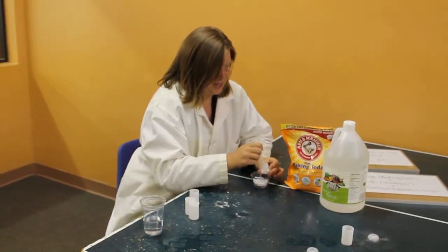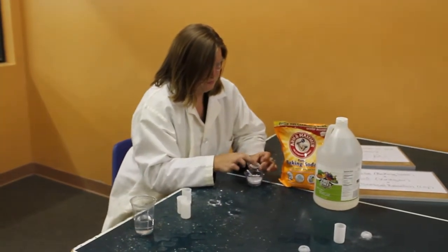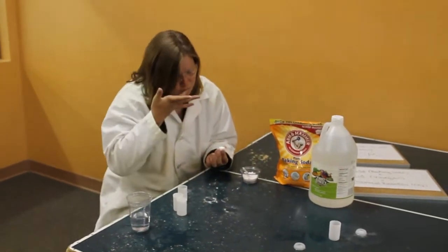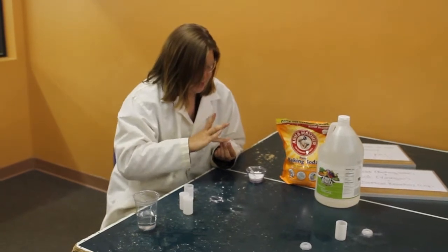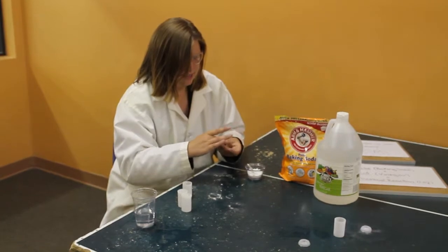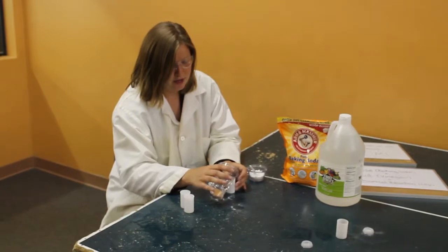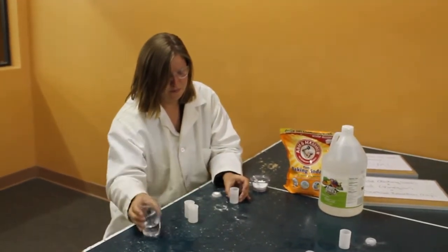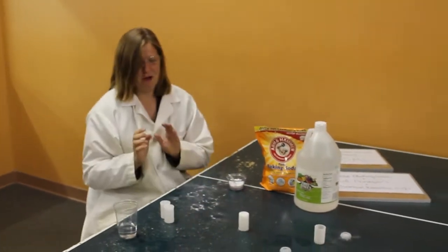Filling our well the exact same way that we've been doing it. Keeping that variable consistent. Spitting on our finger again. Packing that in. Getting off all the extra so it snaps on nice and tight. And this time we're going to put three quarters of the way full. Snap on the top. Flip it over.